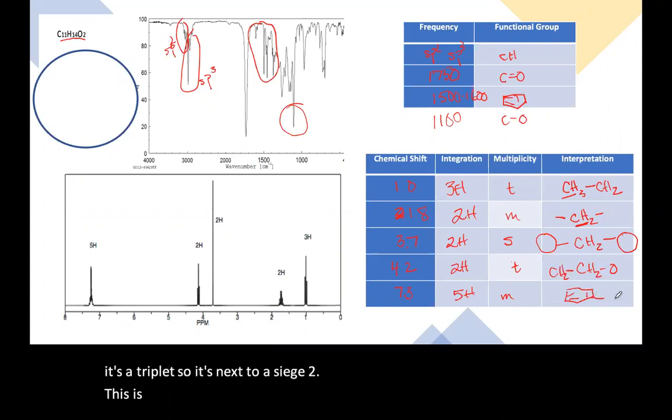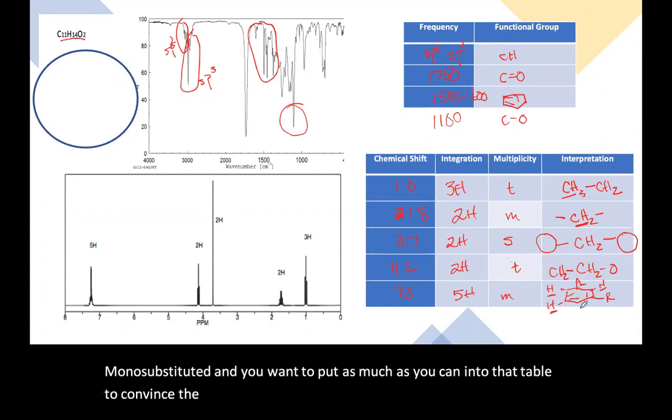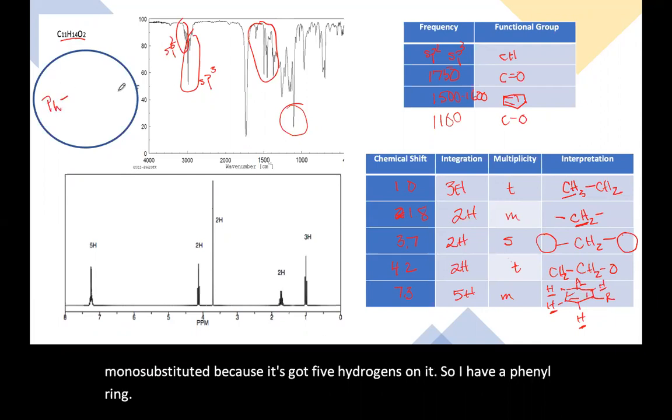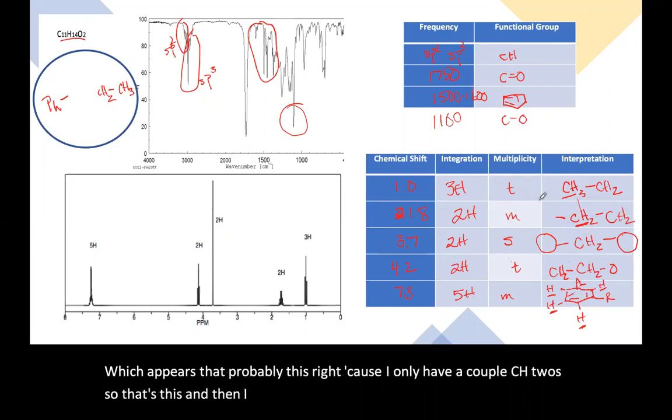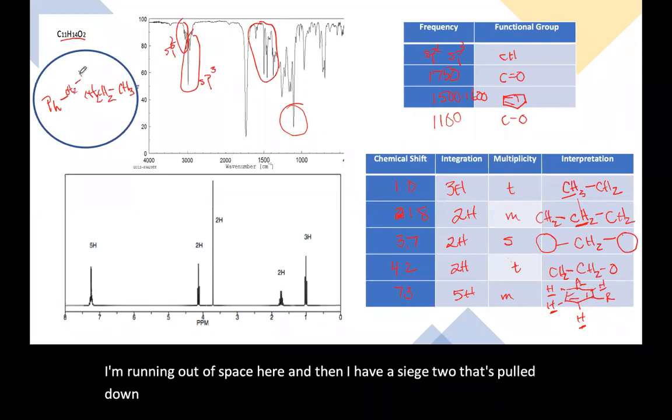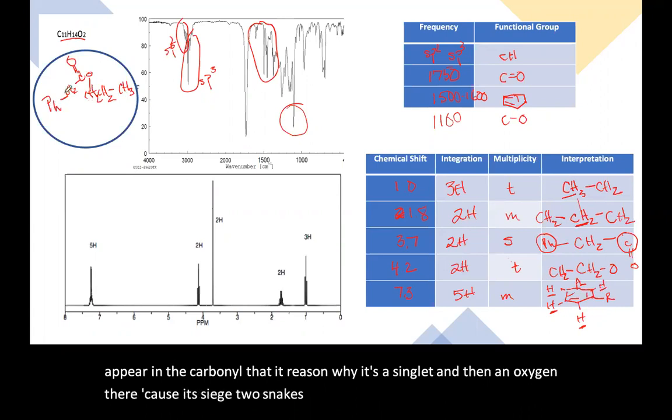This is five hydrogens. So the other thing that we can assume is that this is monosubstituted and you want to put as much as you can into that table to convince the instructor that you have fully analyzed the spectrum. So that's monosubstituted because it's got five hydrogens on it. So I have a phenyl ring. I have a CH3 next to a CH2, which appears that's probably this, right? Cause I only have a couple CH2s. So that's this. And then I only have one other over here that's next to a CH2. So I have a propyl group CH2. I'm running out of space here. And then I have a CH2 that's pulled down field probably by a carbonyl and a phenyl. So if I put the phenyl group here in the carbonyl, that reason why it's a singlet and then an oxygen there because it's CH2s next to an oxygen, not very pretty, but there you go.